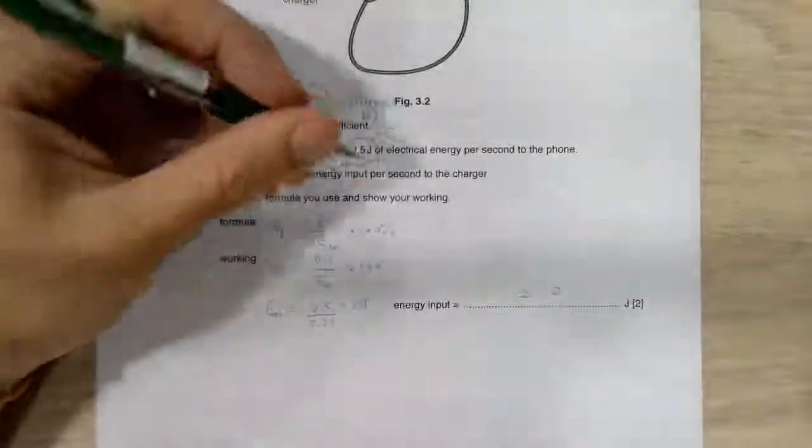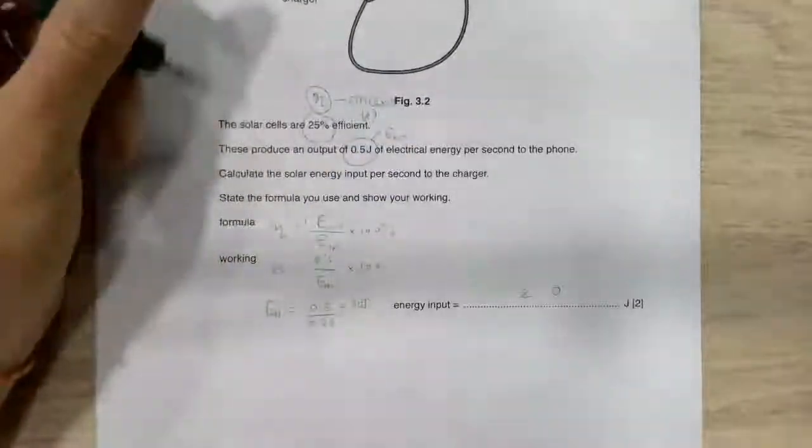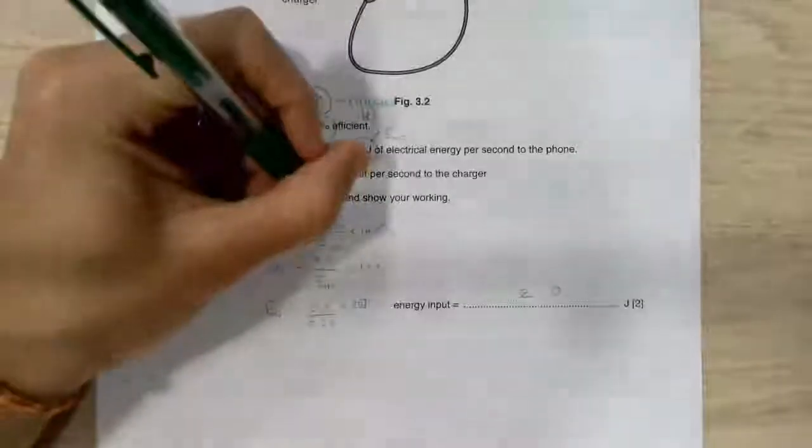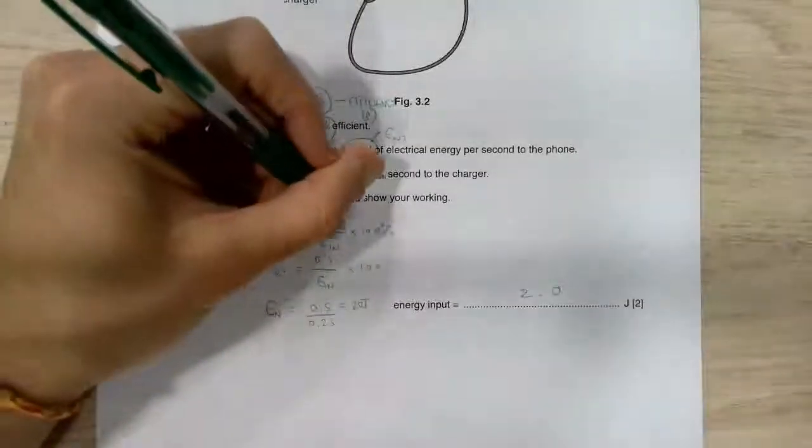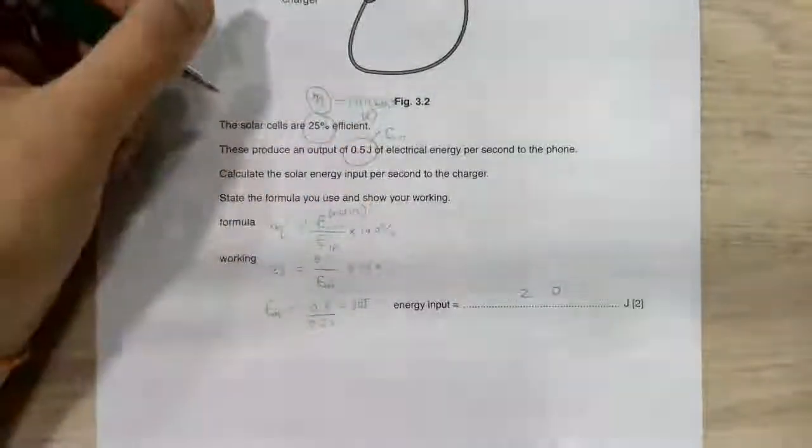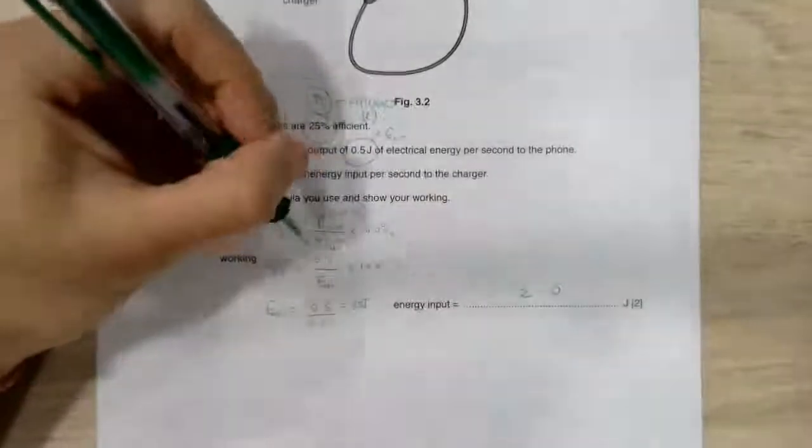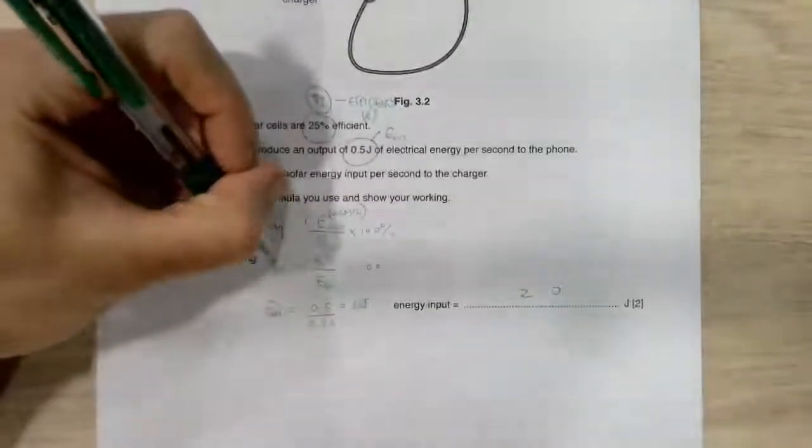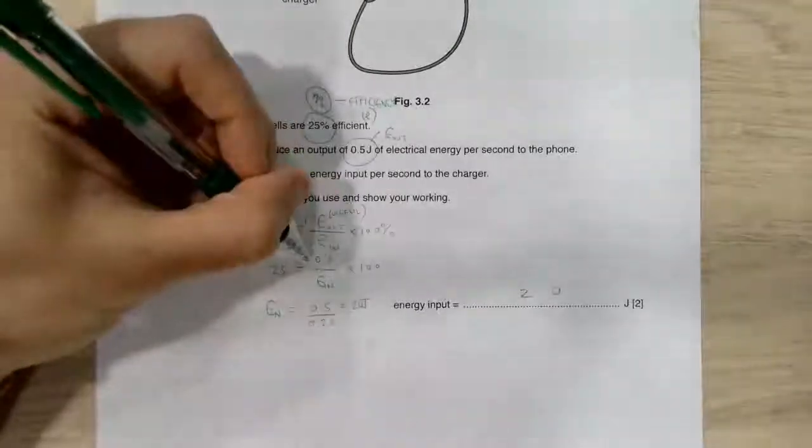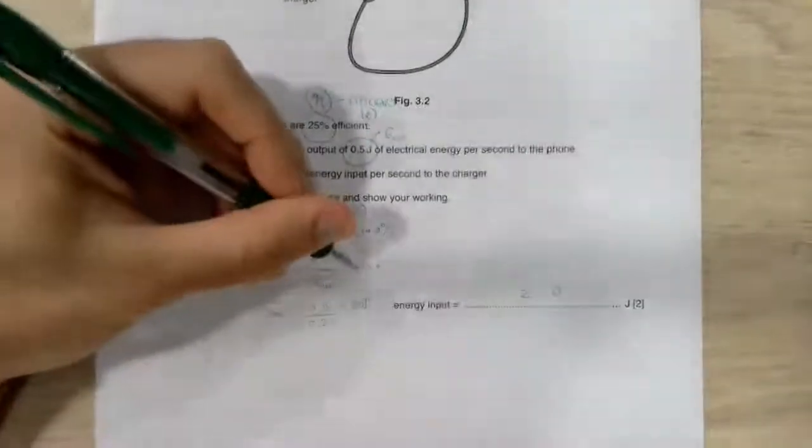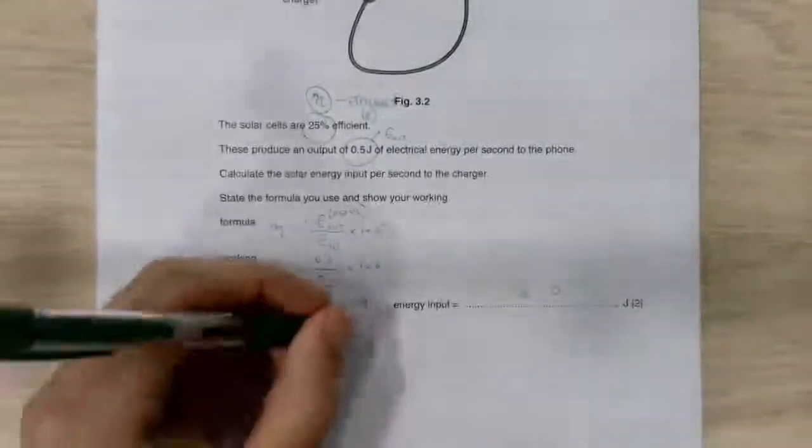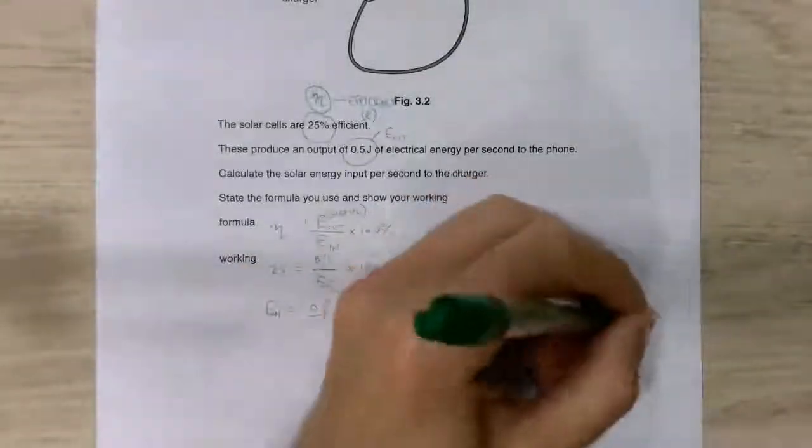We are told that they have an output of 0.5 joules of electrical energy per second to the phone. And then we want to know the input per second. So that's really power. Well, our efficiency is the ratio of the energy out. In this case, we're always using the useful energy out times 100 divided by the energy in. We know the efficiency. We know the energy out. We want to know energy in. So all we have to do is a little bit of rearranging and we end up with our 2 joules.